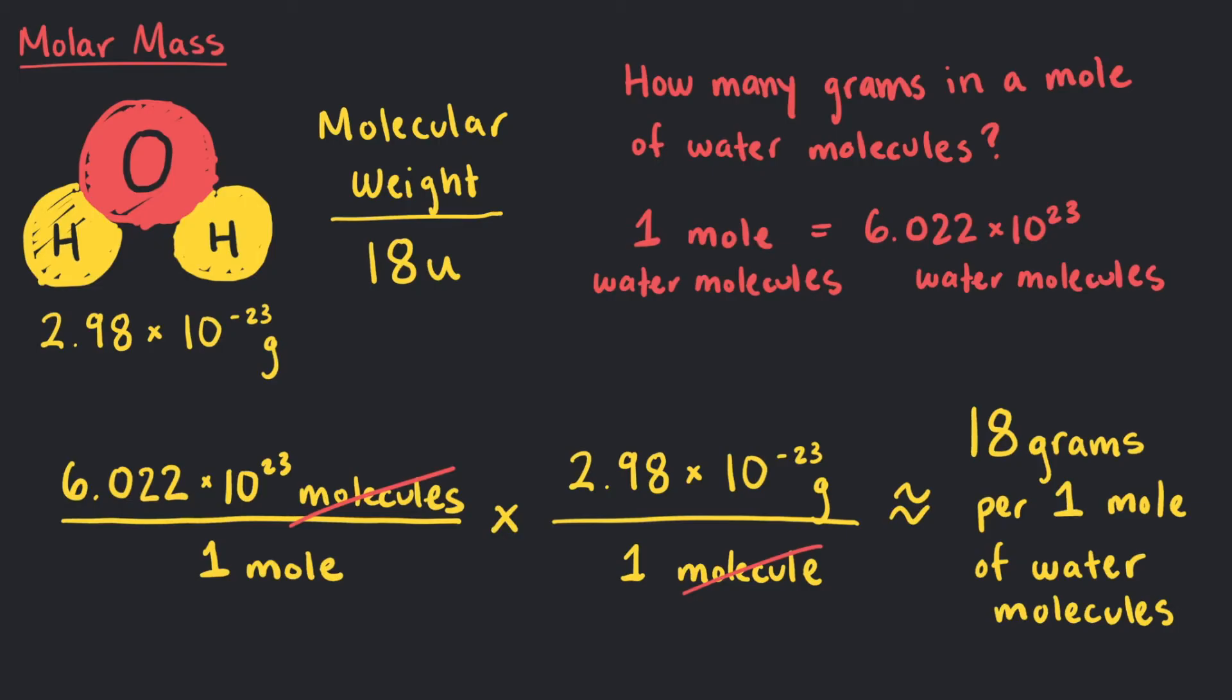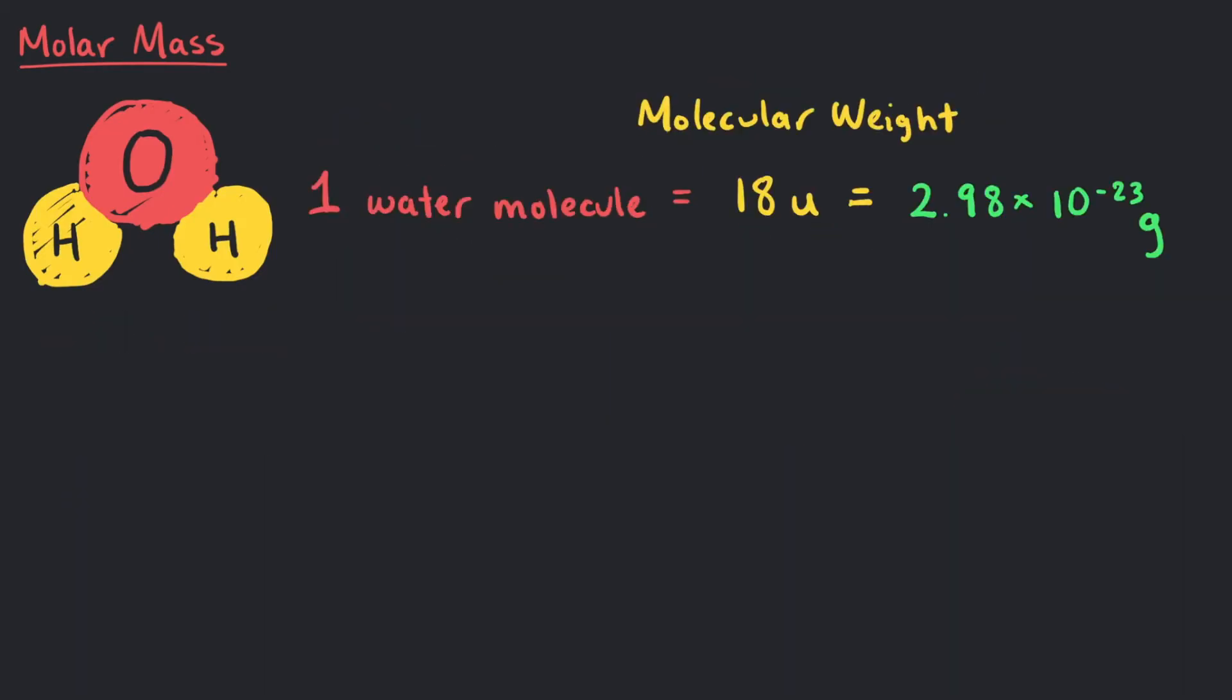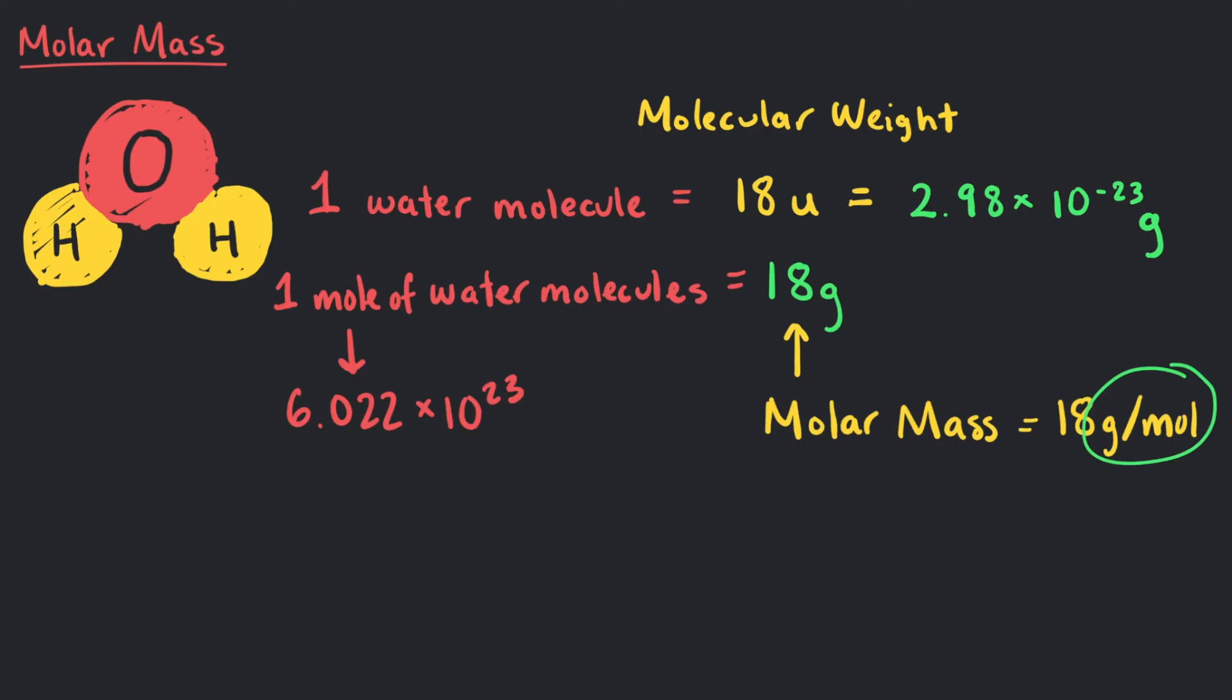Wait a minute. Isn't that the same number as the molecular weight? Yes, it is. With this, we can see that the molecular weight of one water molecule is 18U, which is 2.98 times 10 to the negative 23 grams. However, the molar mass has units of grams per mole, which we found to be 18 grams per 1 mole of water molecules. The units give a totally different meaning to the numerical value.